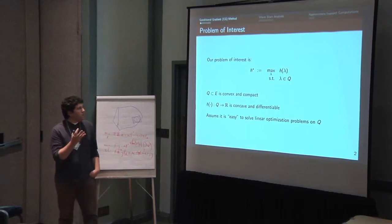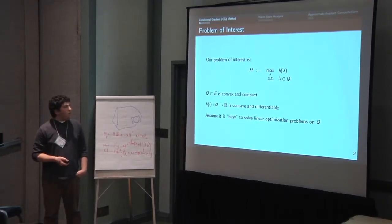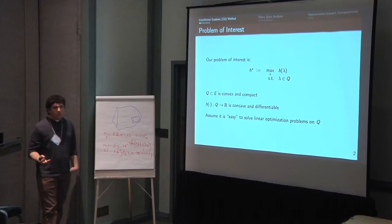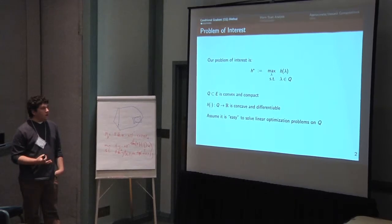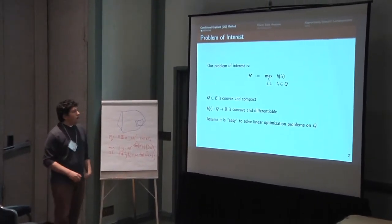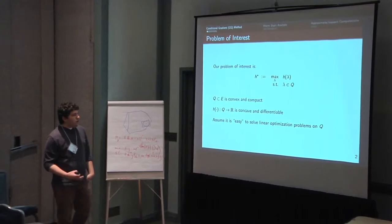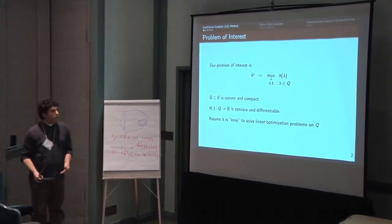So just to set up things here, this is my notation. We'll be looking at convex optimization in maximization form. So we're maximizing a concave function which is differentiable, and Q is a convex-compact set that we can easily solve linear optimization on.